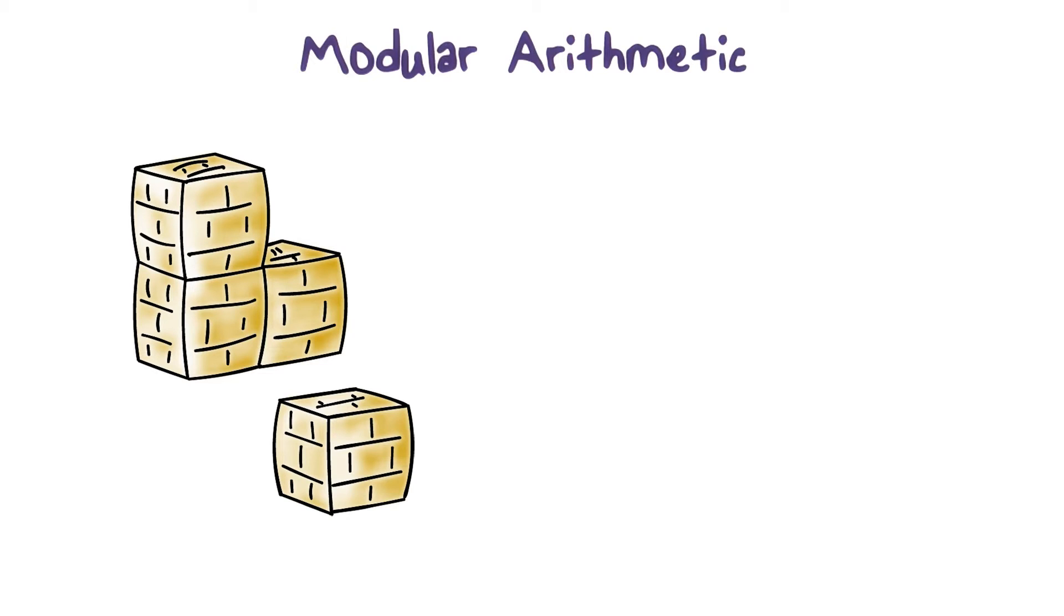Before we discuss the widely used public key algorithms RSA and Diffie-Hellman, let's go over the background first. Both RSA and Diffie-Hellman are based on number theory, an ancient yet active field in mathematics.